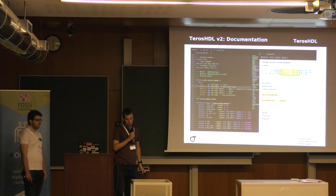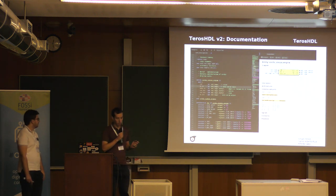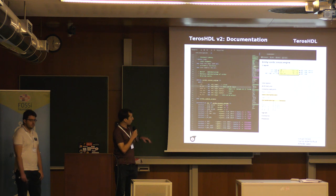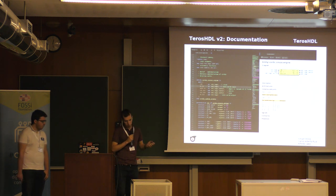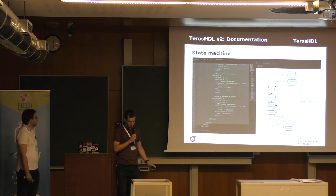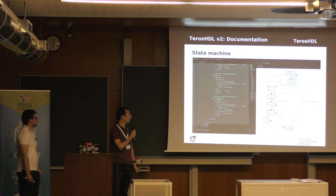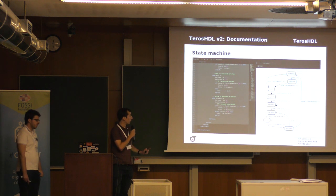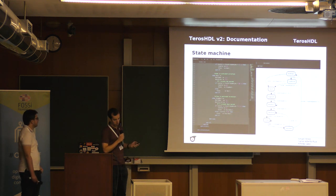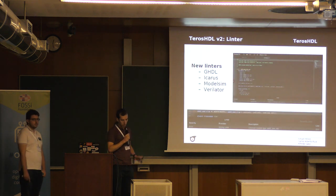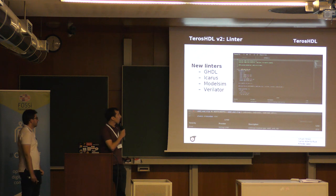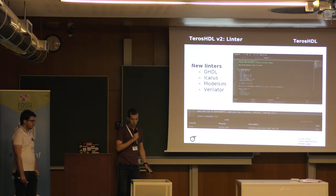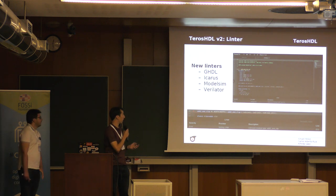The documentation looks great now because we have worked a lot on it. We eliminated some dependencies, so now we can generate a full document that can be exported to many formats. The state machine feature is in early stage development — we have in mind generating state machine diagrams for VHDL and Verilog, and we have something that works but need to improve a lot. We have also added linters, with plans to support VHDL, Icarus, ModelSim, and Verilator — some of them are already working.